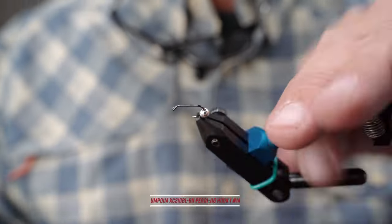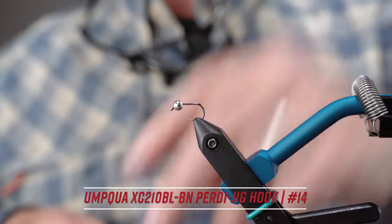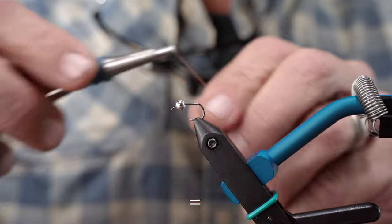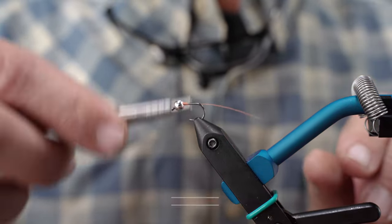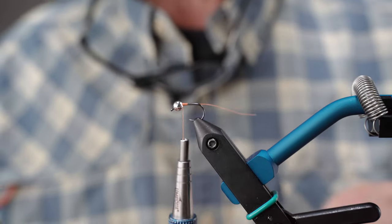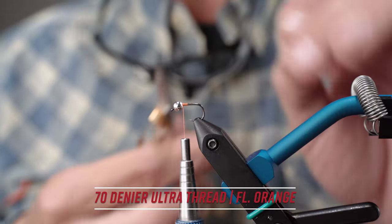You'll see here what I'm going to do is situate my slotted bead up front. We're going to start our thread. This is just some pretty standard materials. We're using 70 denier fluorescent orange in UTC.